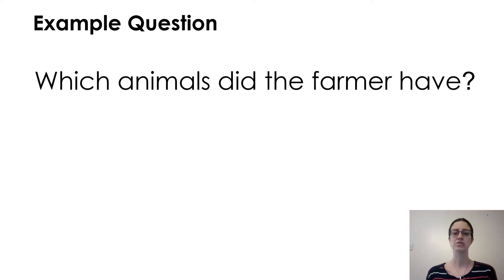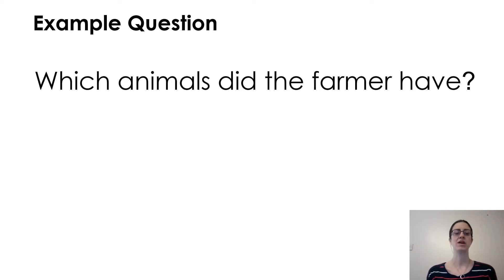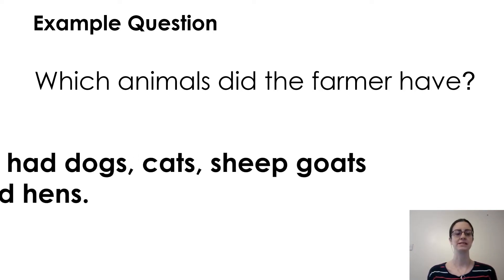Now I need to write my answer under my question. I need to use a full sentence to write my answer, and I need to remember to use a capital letter and a full stop. The answer I have written is: he had dogs, cats, sheep, goats and hens. I've used a full sentence, I've got a capital letter and a full stop at the end of my sentence.